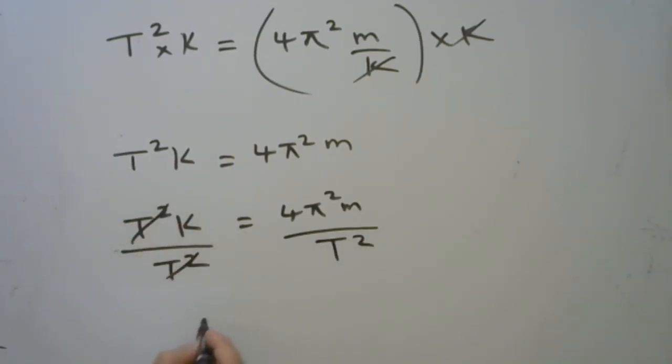This cancels, so we have k is equal to 4π squared m upon T squared.